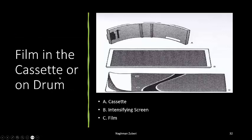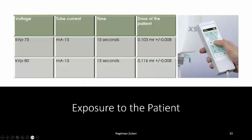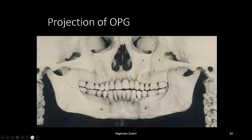The film is housed in a cassette with an intensifying screen. Using proper kilovoltage, current, and time, the dose to the patient can be calculated: at 75 kVp and 15 mA for 15 seconds, it will be 0.103 mR ± 0.008; at 80 kVp and 15 mA for 15 seconds, it will be 0.116 mR ± 0.008. This is how three-dimensional structures of the human face appear on a flat screen in an OPG.